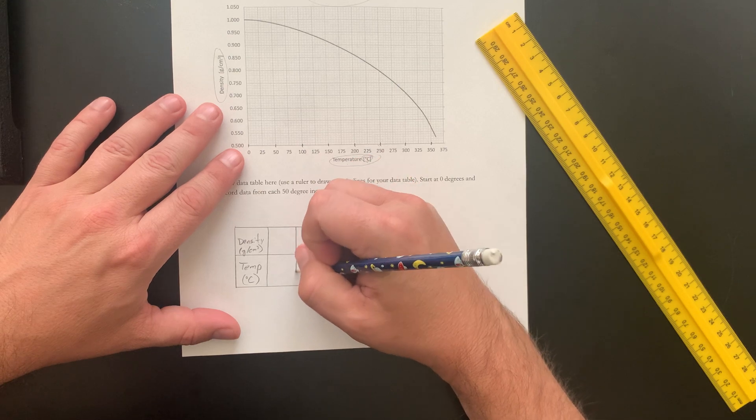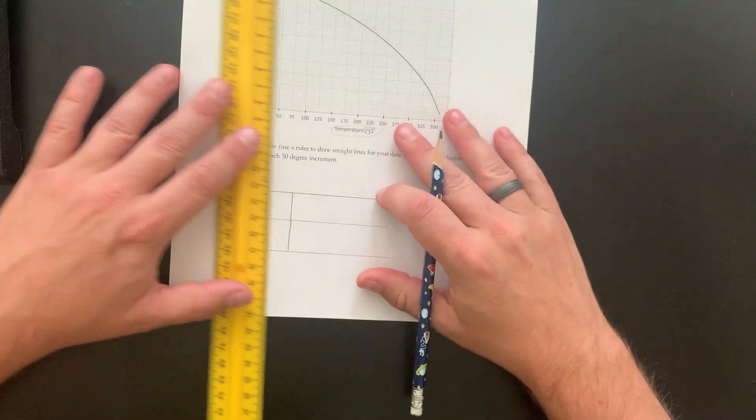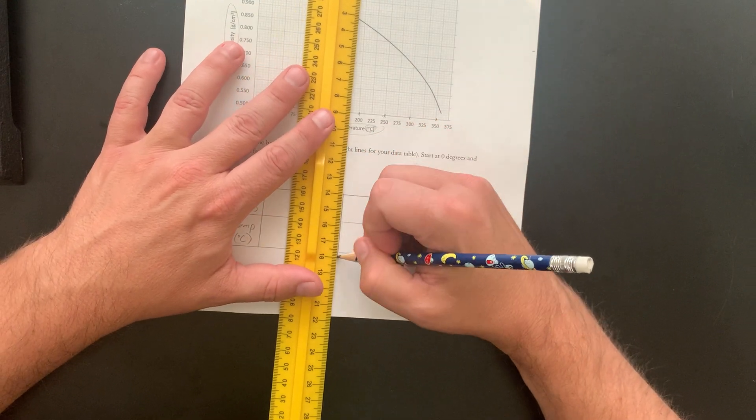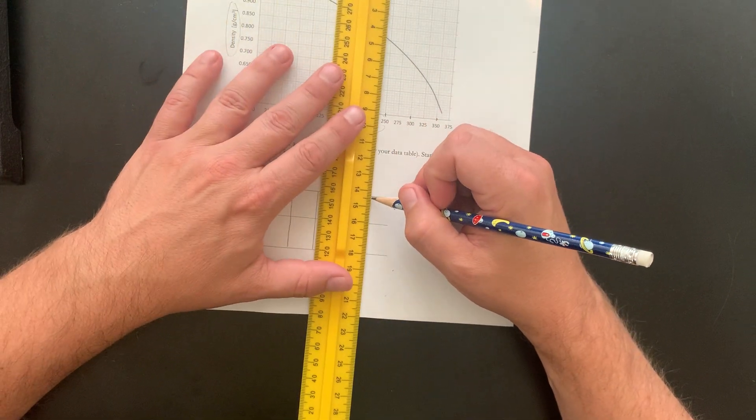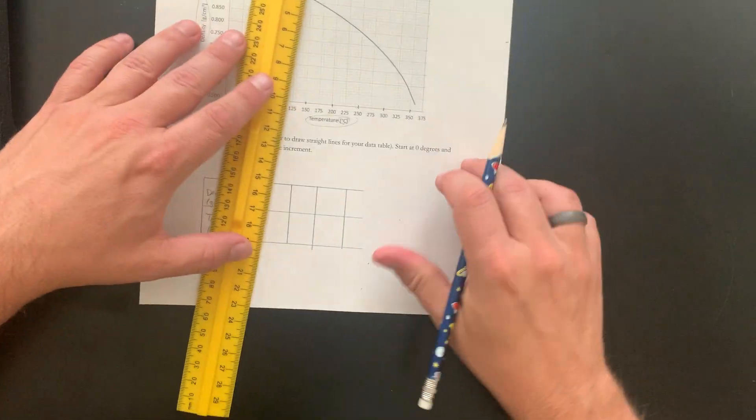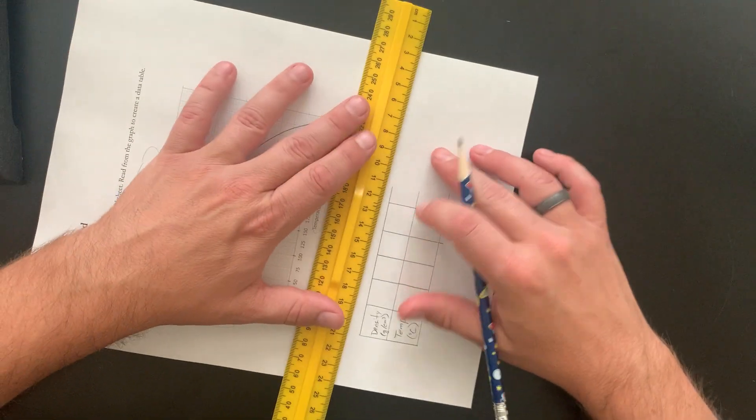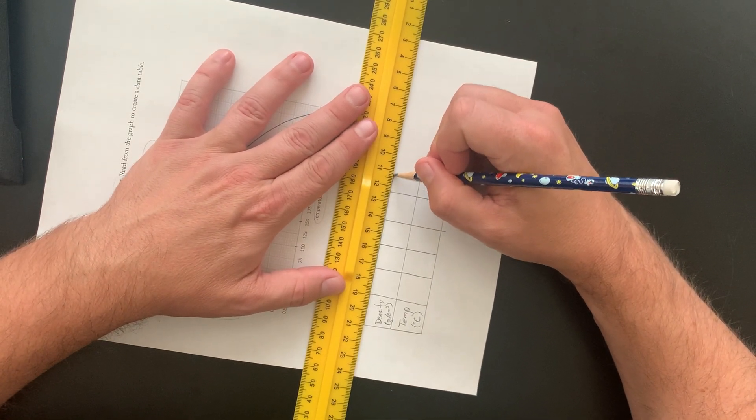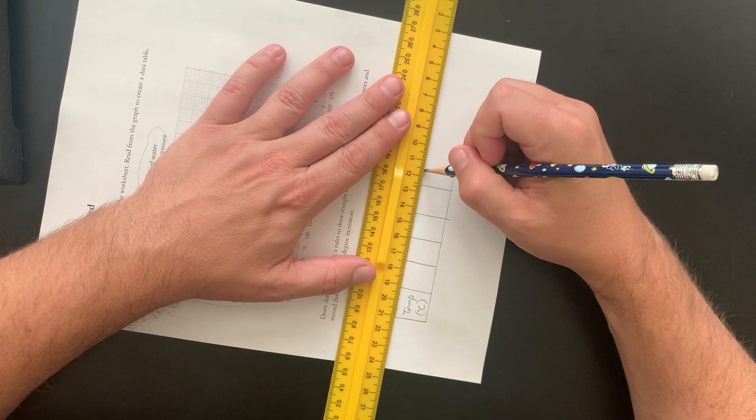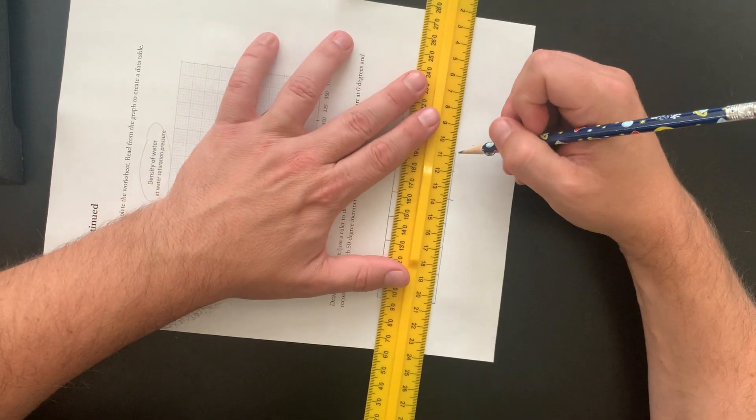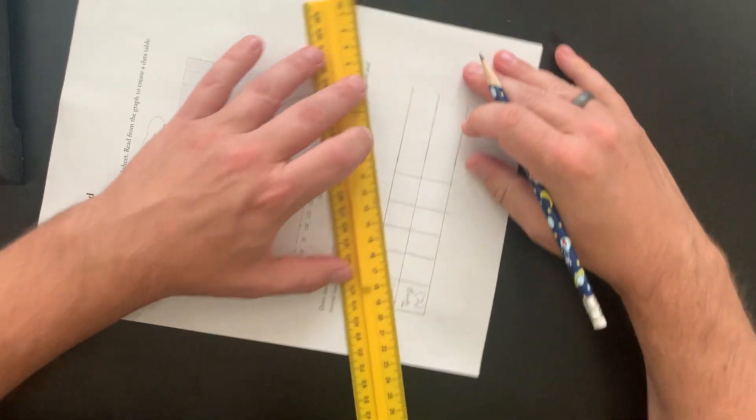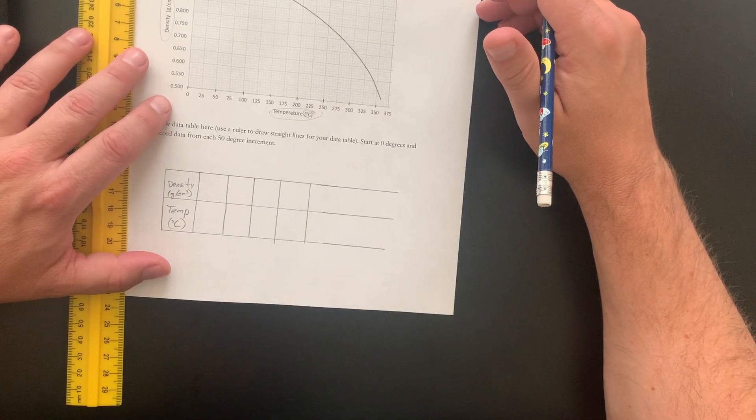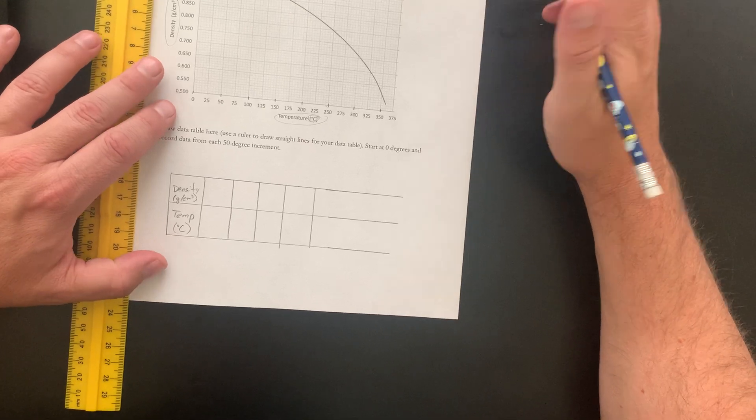So let's go here. One, two, three, four. Let's extend this out. And this is why we want to use the ruler, because even when it's messy with the ruler, it still looks better than you trying to draw straight lines, right?